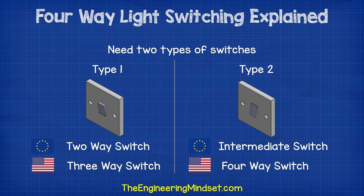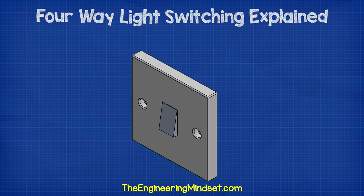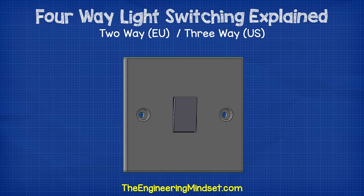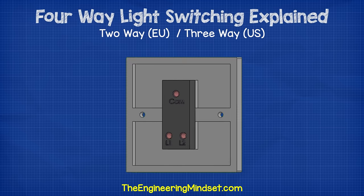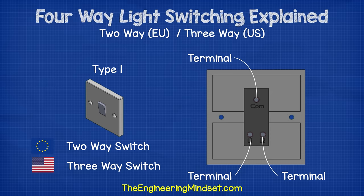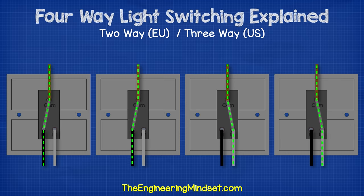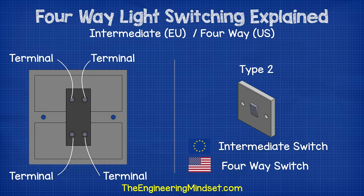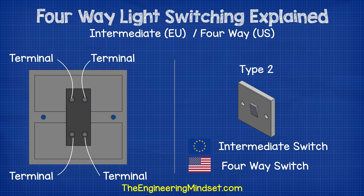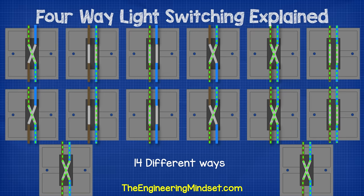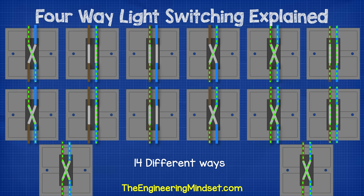On the front face of the switch, both switches look the same, but the two-way or three-way switch has three terminals on the back. The switch can be flipped only two ways — up or down — but the electricity can flow through the switch in four different ways, depending on how it's connected into the circuit. The intermediate switch or four-way switch can also be flipped in only two ways, up or down, but on the back we find four terminals. The electricity can flow through this in 14 different ways, depending on how it's wired into the circuit.